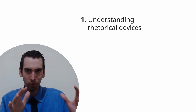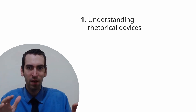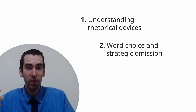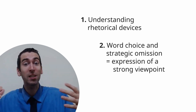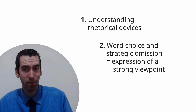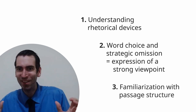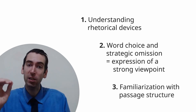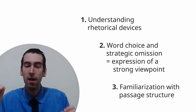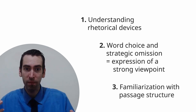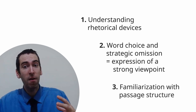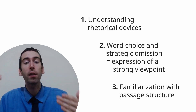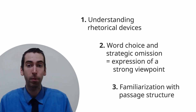First, we'll break down a few of those rhetorical tools we've referenced. Then we'll talk about word choice and strategic omission, which can serve the same purpose as the expression of a strong viewpoint. Last but not least, we'll familiarize ourselves with a few common passage structures you can expect to see on the CARS section, and then give you some tips for how to find these on your own for other topics.